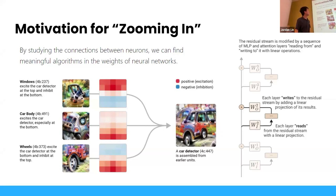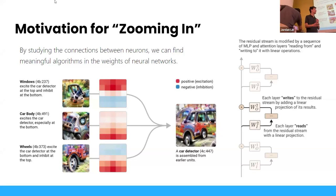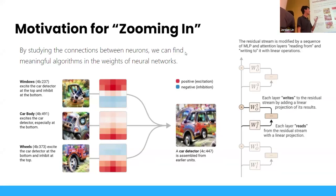By studying the connections between neurons, we can find meaningful algorithms in the way of neural networks. Imagine your large transformer model or CNN as a piece of compiled binary. What we want to do is transform this into a nice piece of C++ or human-readable code. In a sense, we're decompiling the weights of the network into interpretable algorithms.